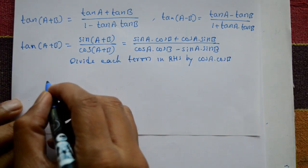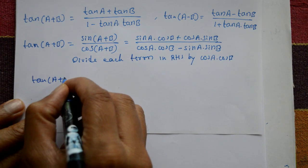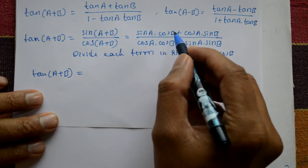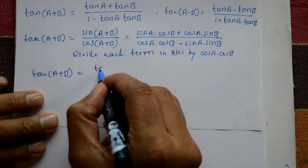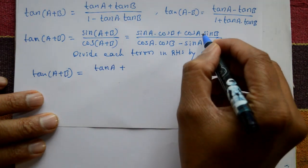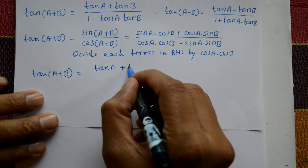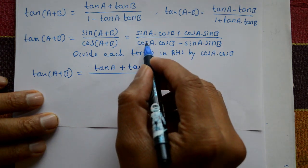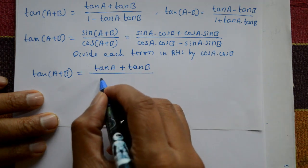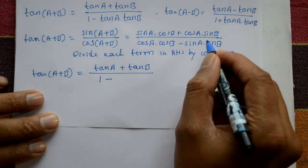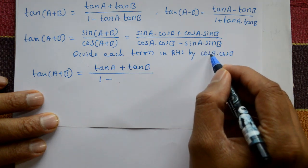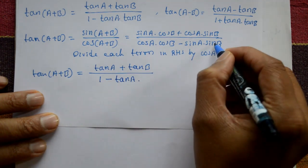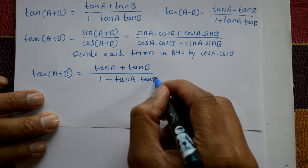Now tan(a+b) equals — this is the left hand side. Dividing: cos b cancels, sin by cos gives tan a; plus dividing cos a cancels, sin b by cos b gives tan b. In the denominator, cos a into cos b divided by cos a into cos b is 1; minus sin a into sin b divided by cos a into cos b gives tan a into tan b.